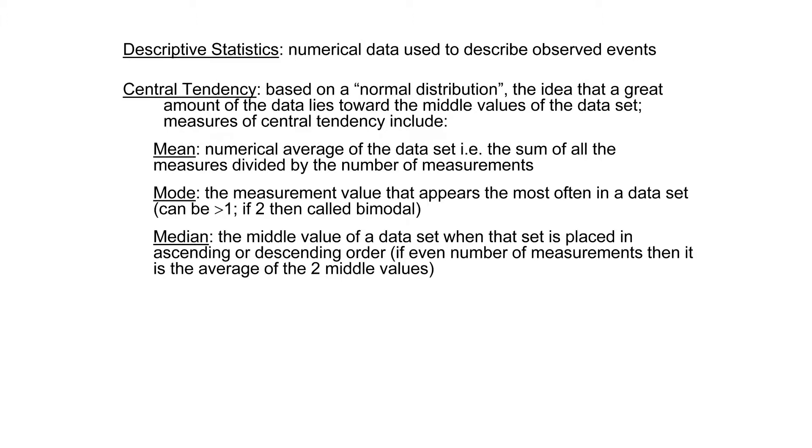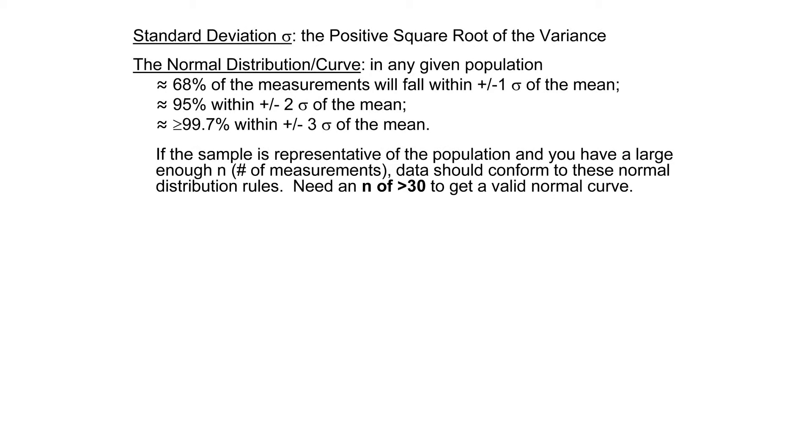The mode gives you the most frequently occurring item in your data set, but it doesn't necessarily conform to central tendency because you could have bimodal or trimodal distributions. The median gives you the center of the data. The mean can be very skewed if you got outliers, so it's very important to notice standard deviation.